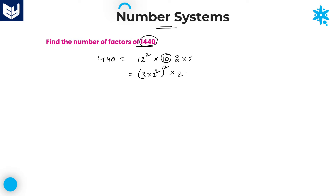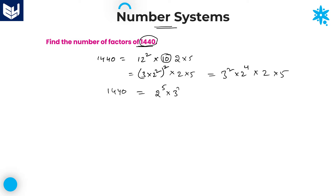So, 3 into 2 squared, that is the value of 12, and whole squared is there, into 2 into 5. Now you can write down all the values: 3 squared into 2 squared whole squared means 2 to the power 4, into 2, into 5. So 1440 is equal to — how many 2's are there overall? — 2 to the power 5, into 3 to the power 2, into 5 to the power 1. This is the value of 1440 in terms of prime factors.